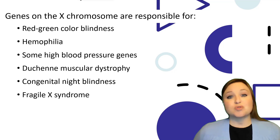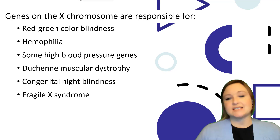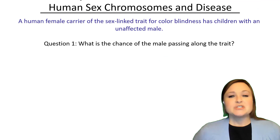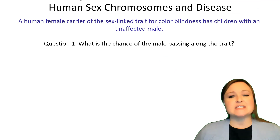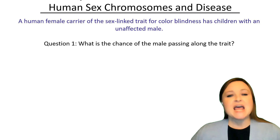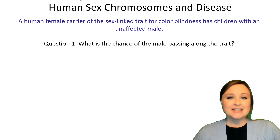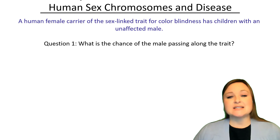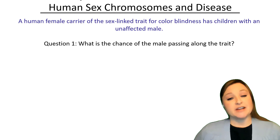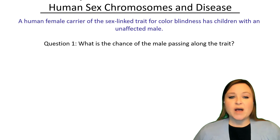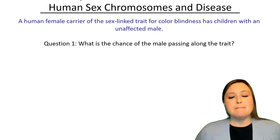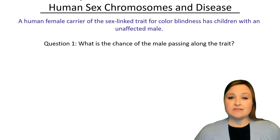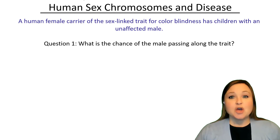Let's walk through some practice questions concerning the inheritance of X-linked traits. Try to pause the video after we ask the question and see if you can answer it, and then we'll walk through it together. Here's the scenario: a human female carrier of the sex-linked trait for colorblindness has children with an unaffected male. Question one: what is the chance of the male passing along the trait for colorblindness?